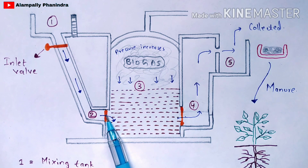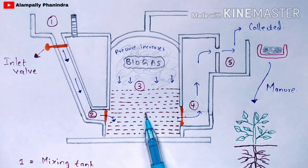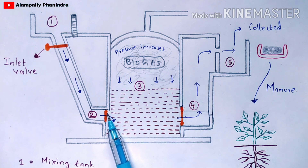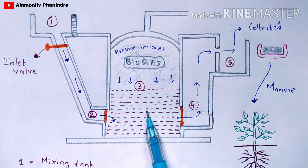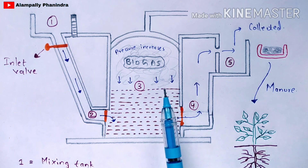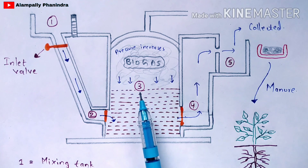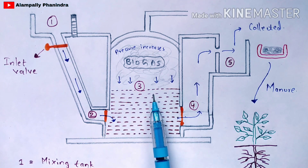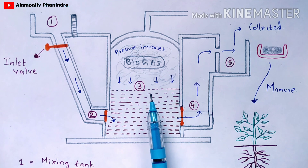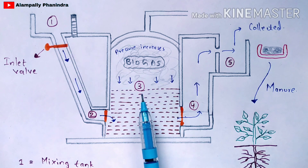Open the inlet chamber valve so the slurry enters the digester tank, while keeping the digester tank valve closed. One very important point: the digester tank should only be partially filled — that is, about half filled — with the slurry. This is shown in the diagram as half filled. The tank must be partially filled so that the methanogens can carry out their function in the remaining space.